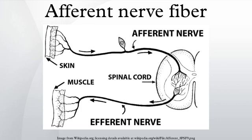In the nervous system, afferent neurons carry nerve impulses from receptors or sense organs toward the central nervous system. This term can also be used to describe relative connections between structures. Afferent neurons communicate with specialized interneurons. The opposite activity of direction or flow is efferent.